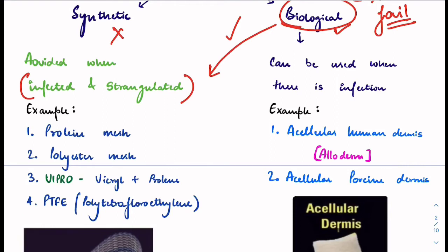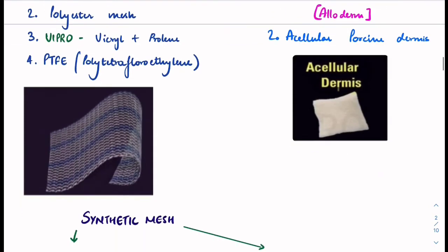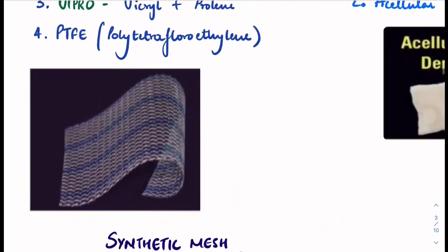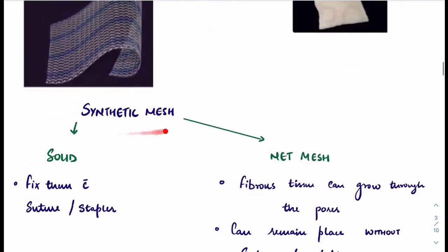Examples of synthetic mesh include prolene mesh, polyester mesh, and PTFE. For biological mesh: acellular human dermis (Alloderm) and acellular porcine dermis. An important distinction is that acellular dermis has no pores, whereas synthetic mesh is porous.